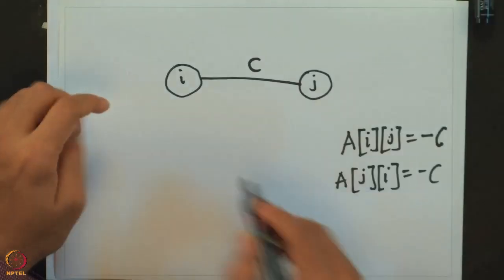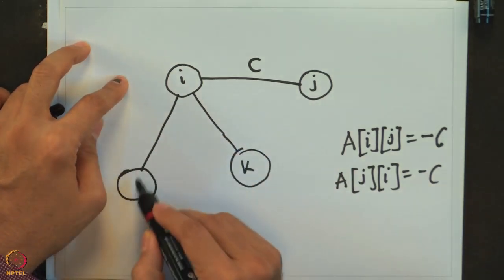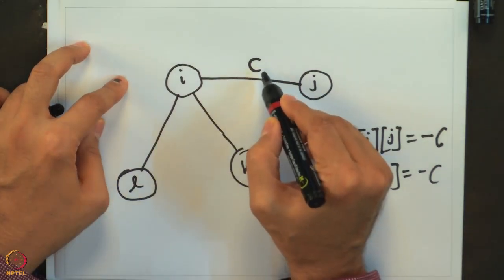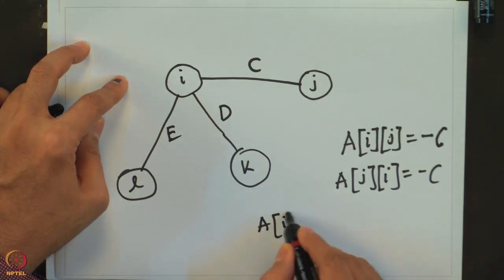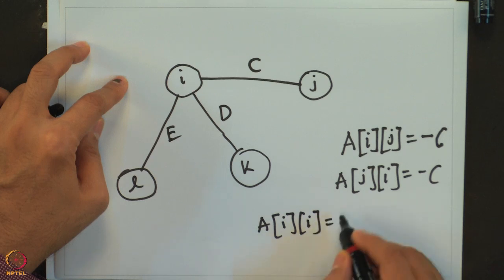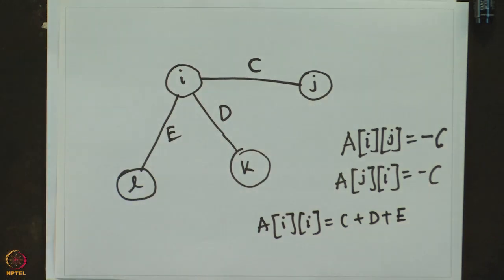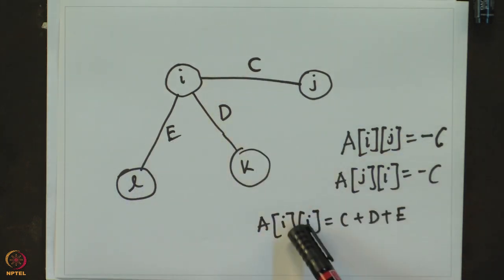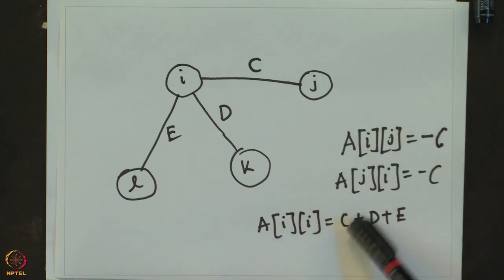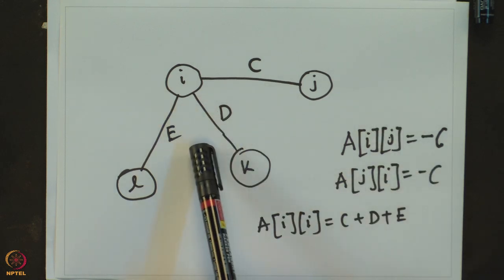For example, suppose node i has conductances C, D, and E connected to nodes j, k, and l respectively. Then A[i][i] equals C plus D plus E. Given the circuit we can figure out these values, and given these values we can figure out the circuit — so to that extent this is the representation of the circuit.